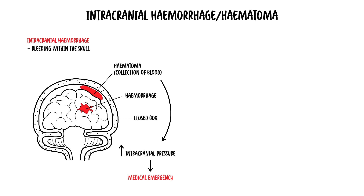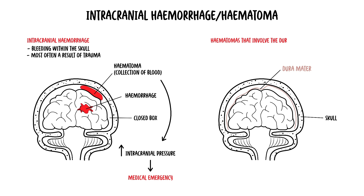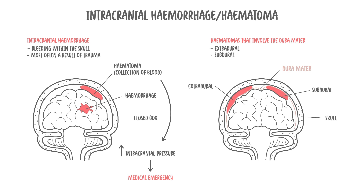This is a medical emergency. Intracranial hematomas are most commonly caused by rupture of a blood vessel within the brain, or as a result of trauma, such as a fall, knock on the head, or a car accident. There are two types of hematomas that involve the dura mater, the most superficial meningeal layer: the extra-dural or epidural hematomas and the sub-dural hematomas.